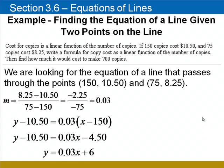We'll use the first point, 150 and $10.50, for x₁ and y₁, and we'll substitute our slope of .03 for m. Distribute the .03, and finish by adding 10.50 to both sides. Our equation is y equals 0.03x plus 6. In other words, you pay $6 plus 3 cents per copy.